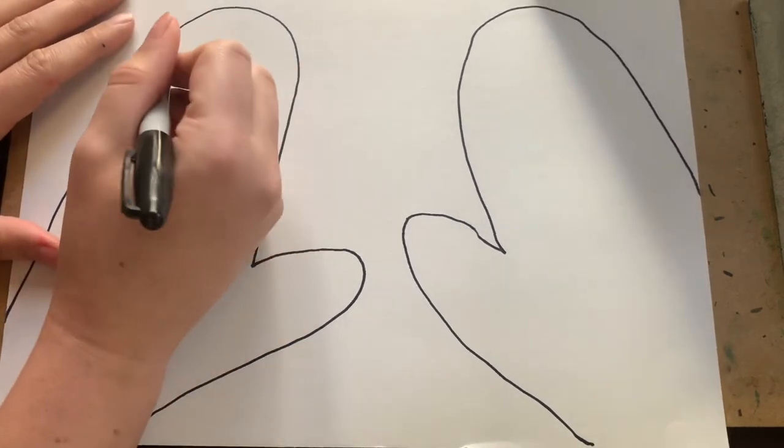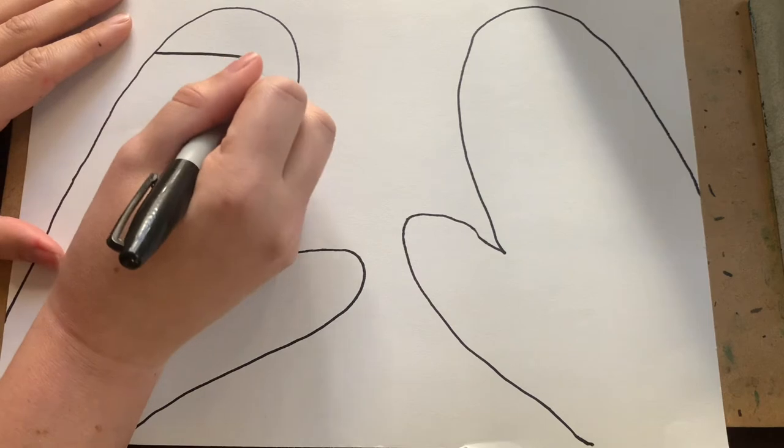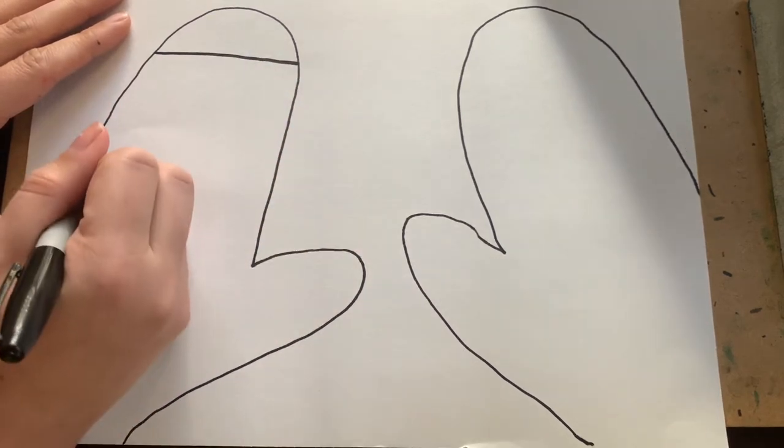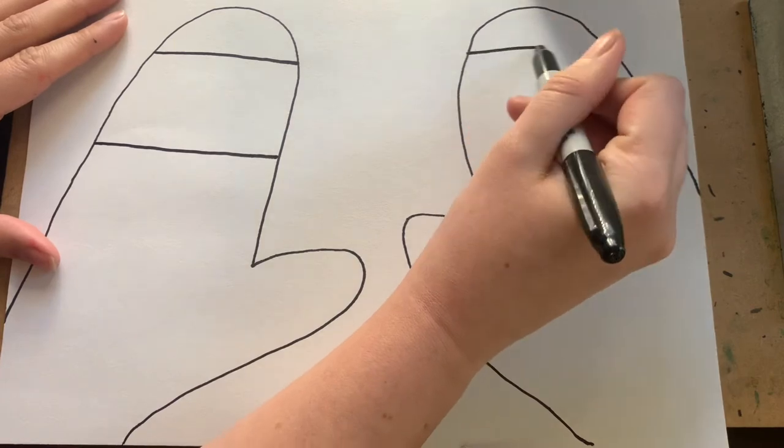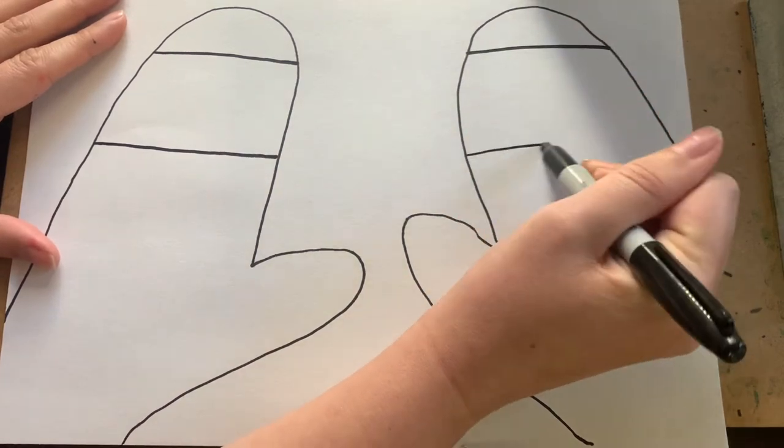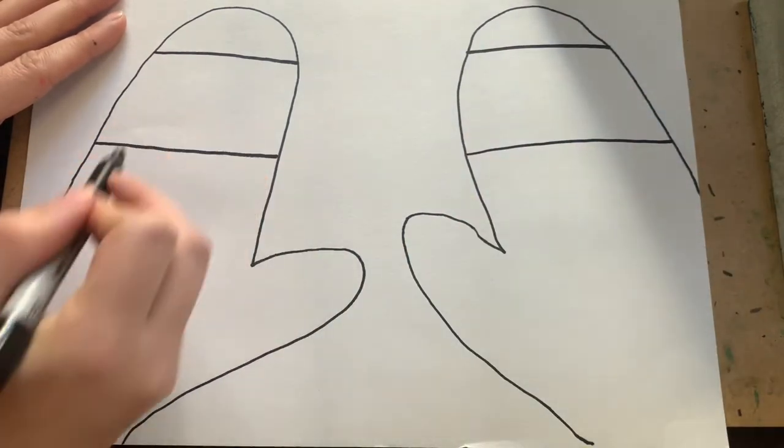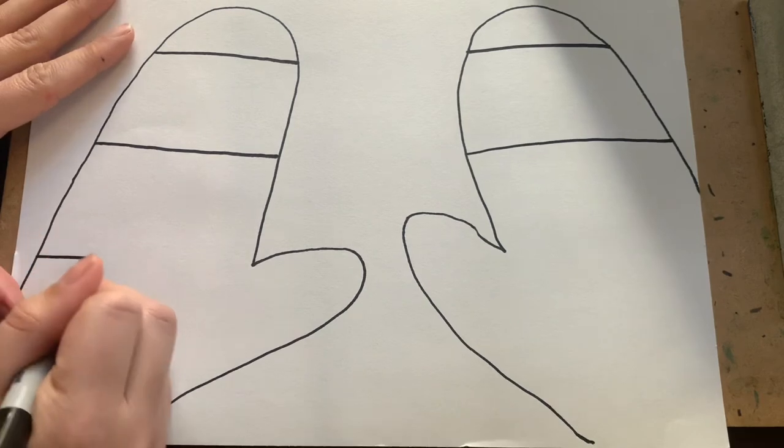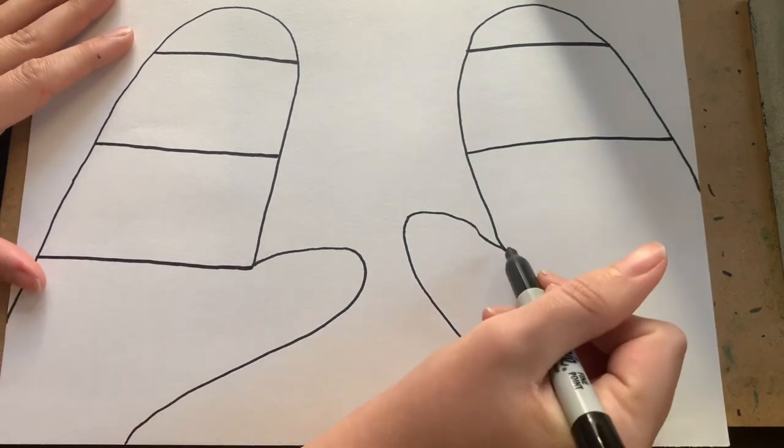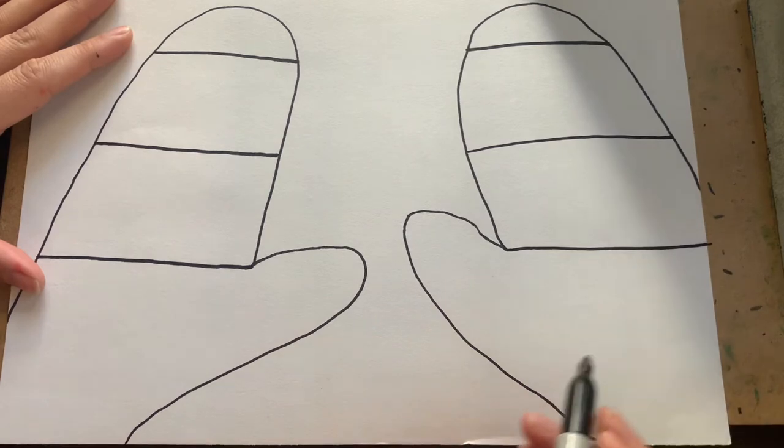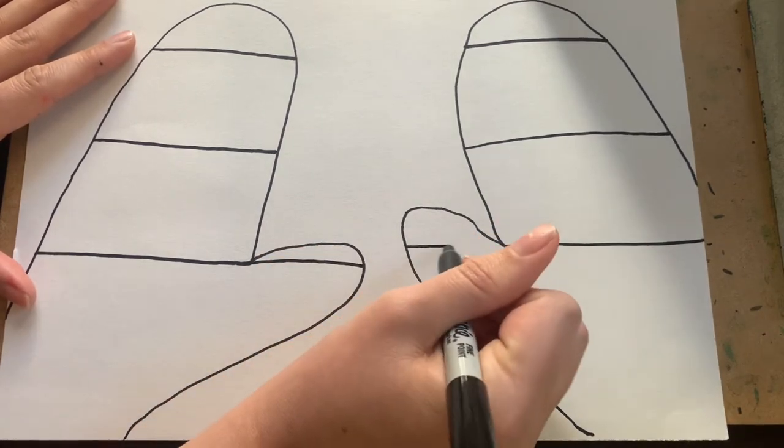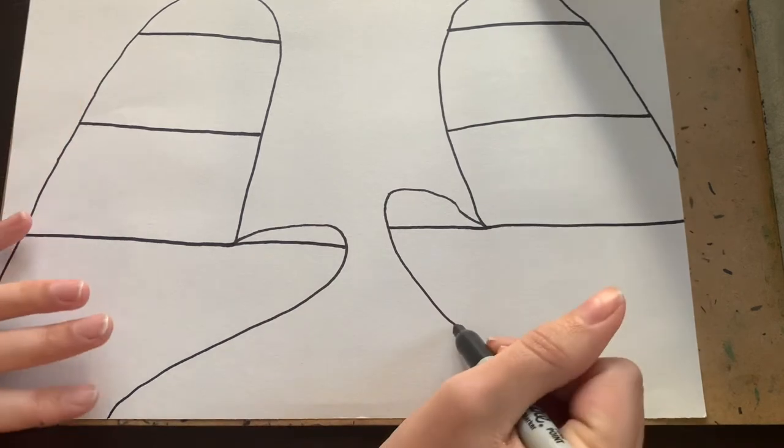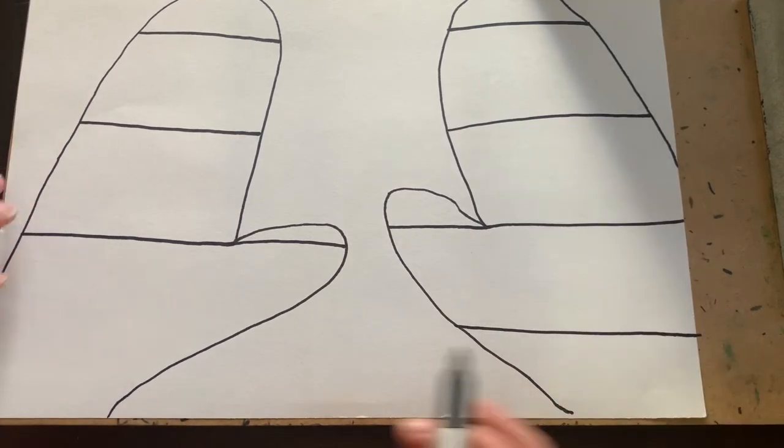To do this, the next step is I'm going to draw some horizontal lines across those mittens to show where my different sections are going to be. The reason why I have different sections is because we are going to be filling in our mittens using different types of patterns. So we are using patterns today, that principle of design part of those elements of art. So going through, drawing those lines.